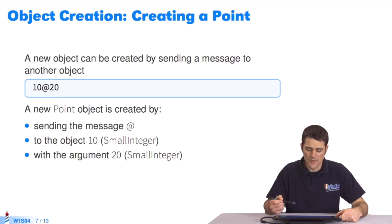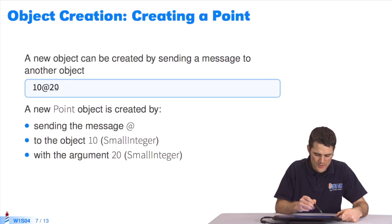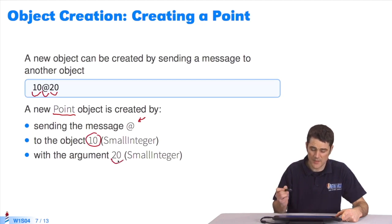To create objects, we have special messages. Here, for example, if I send the message at to the integer 10 with the argument 20, it'll create a point, an instance of the class point. The name of the message is at. The integer that received the message is 10, the one before the name of the message, and the argument after the name of the message is 20.